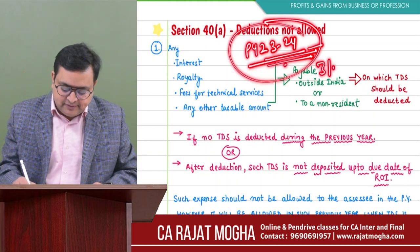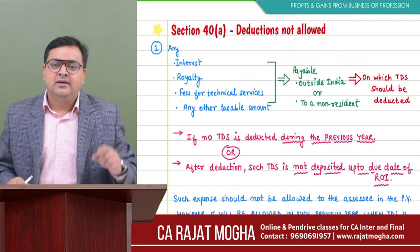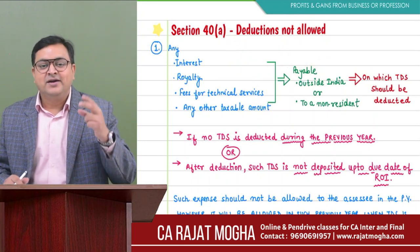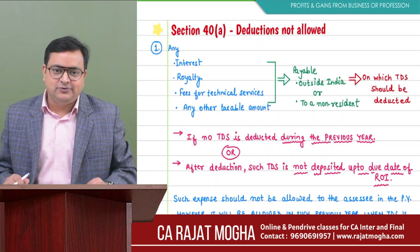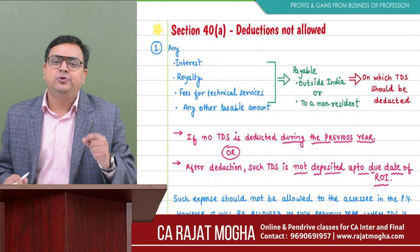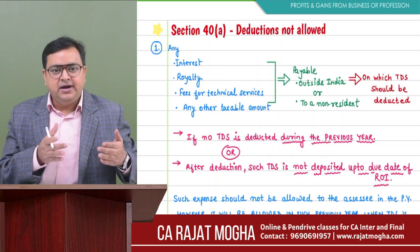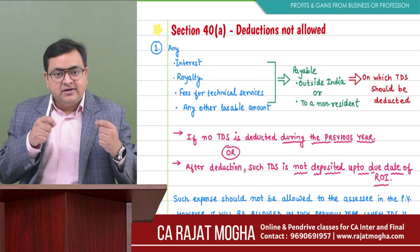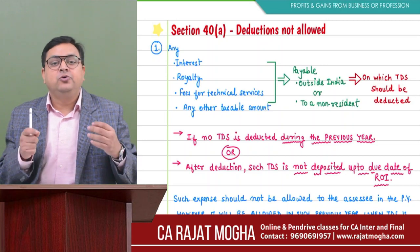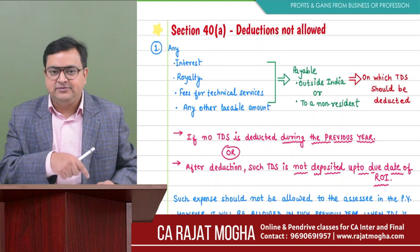Please deduct TDS up to 31st March 2024 — the last day of the year. After deducting, you also have to deposit the TDS. Just deduction alone will not do — you have to deposit TDS up to the due date of ROI. Whose due date of ROI? The person who is making the payment. For example, if Mr. Ram is sitting in India and making a payment, it is Ram's due date of ROI.